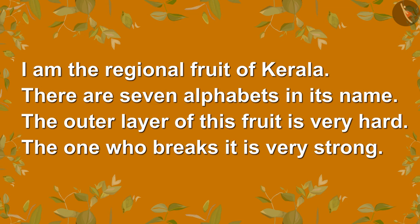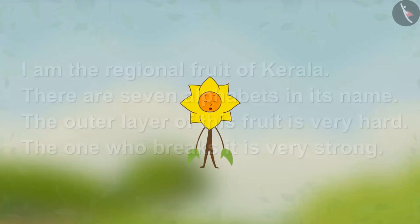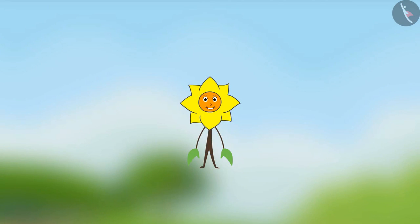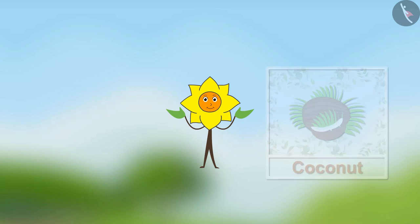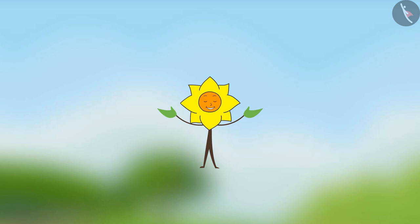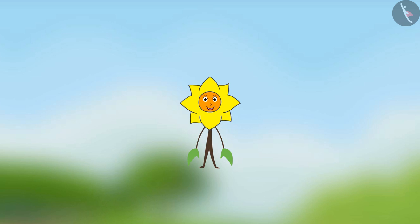I am the regional fruit of Kerala. There are seven alphabets in my name. The outer layer of this fruit is very hard, the one who breaks it is very strong. Could you think? Coconut! Friends, did you recognize me? I am Podmal!